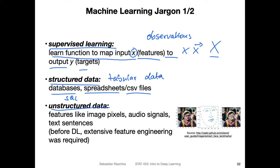Then unstructured data - this is usually what we refer to as the raw data. For example, images, the pixels in an image, audio signals or text sentences like documents. And this is usually something that deep learning works with. Before deep learning, we usually needed extensive feature engineering, as I explained before, where we extracted features from raw data sources.